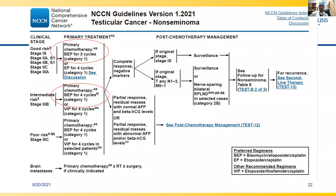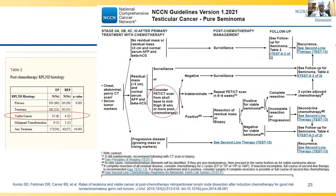For non-seminomatous Stage 2 and above, primary chemotherapy is the gold standard. Stage 2 through 3A: three cycles of BEP. Stage 3B high risk: four cycles of chemotherapy — bleomycin, etoposide, and cisplatin is the standard. The rate of relapse is less than 1% at five years for seminomas. For patients receiving four cycles of EP or three cycles of BEP, viable cancer rates at RPLND at five years are roughly 6% and 5% respectively.